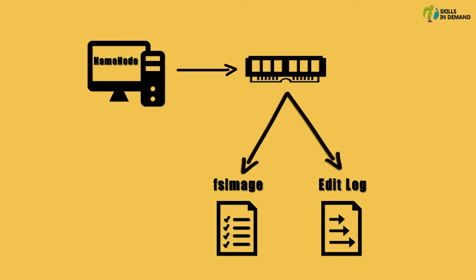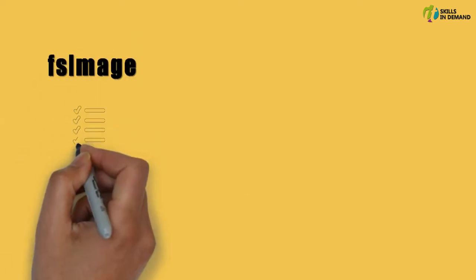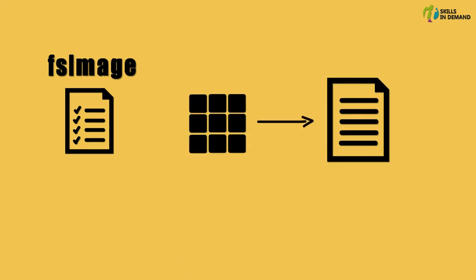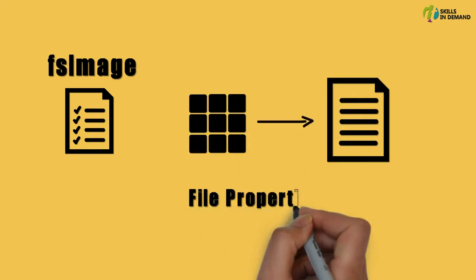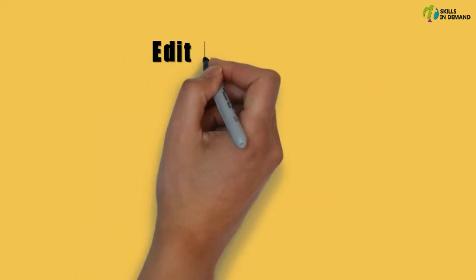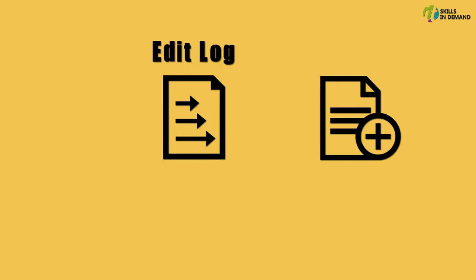Let us explore these two files in more detail. The fsimage stores information about all the blocks that belong to a file and the file system properties. The edit log, on the other hand, keeps track of all the transactions that have taken place on the file system. For example, when a new file is created, an entry is made into this edit log file.